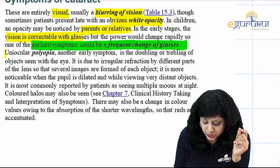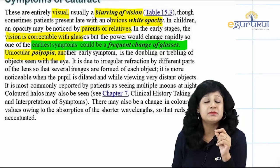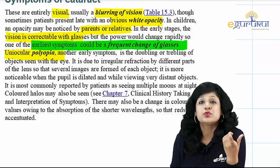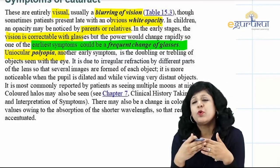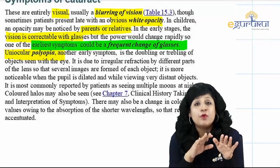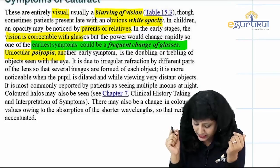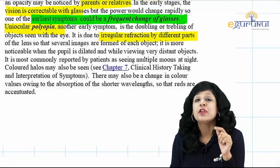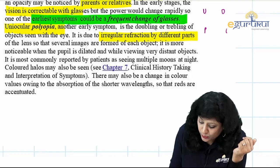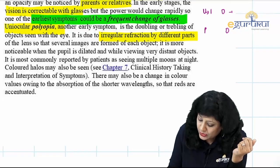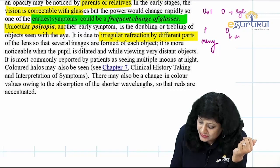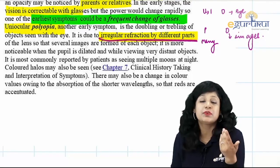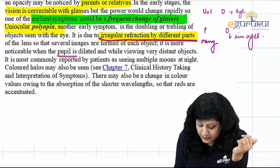Another important early symptom is uniocular polyopia. It is always a feature of early stages of cataract because it occurs due to uneven opacification. As we move towards more mature stages of cataract, there is more homogeneous opacification and less polyopia. Uniocular polyopia — uni means one, ocular means eye, poly means many, opia means images — multiple images formed by one eye due to irregular refraction by different parts of the lens. It is more noticeable when the pupil is dilated viewing distant objects, most commonly reported as seeing multiple moons.